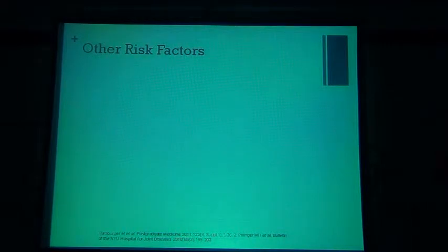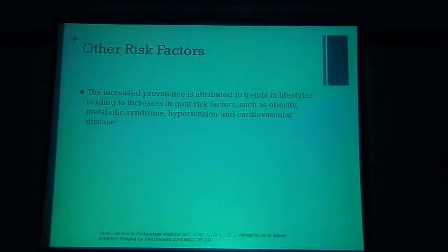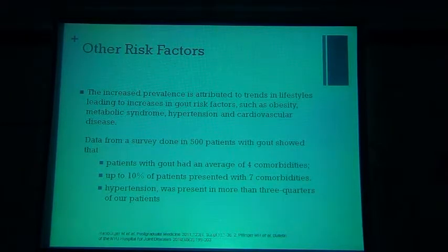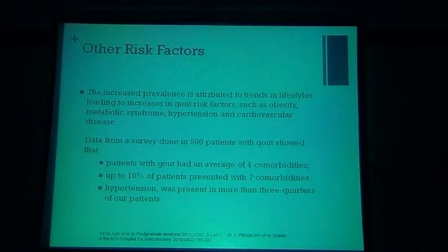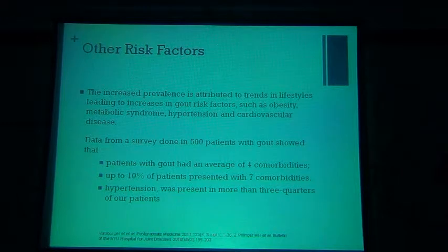Uric acid is the main risk factor, but there are other contributory factors: lifestyle, high fatty foods, obesity, diabetes, hypertension, and cardiovascular disease. A survey of 500 people with gout identified that most had four comorbid conditions; 10% had seven comorbid conditions; and 75% had hypertension. So when you see a person with suspected gout, we must check not only uric acid but also blood pressure, cardiovascular status, triglycerides, cholesterol, and lipid profile.